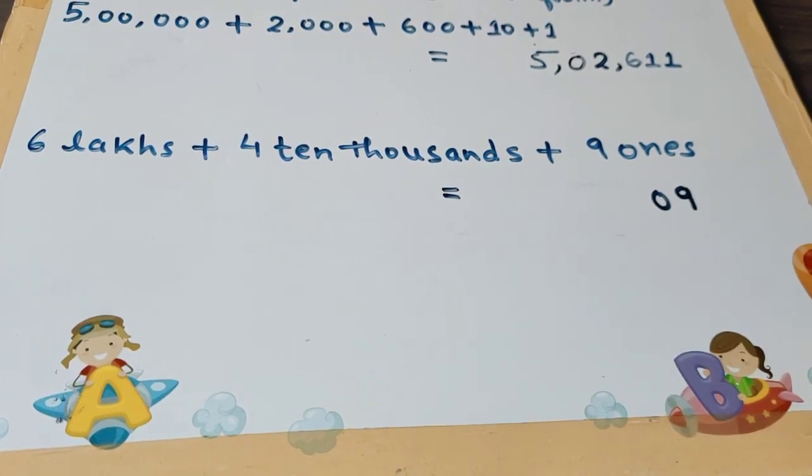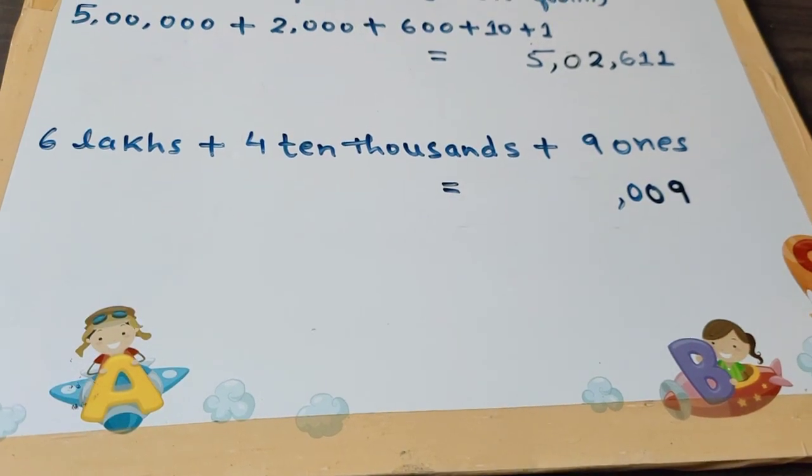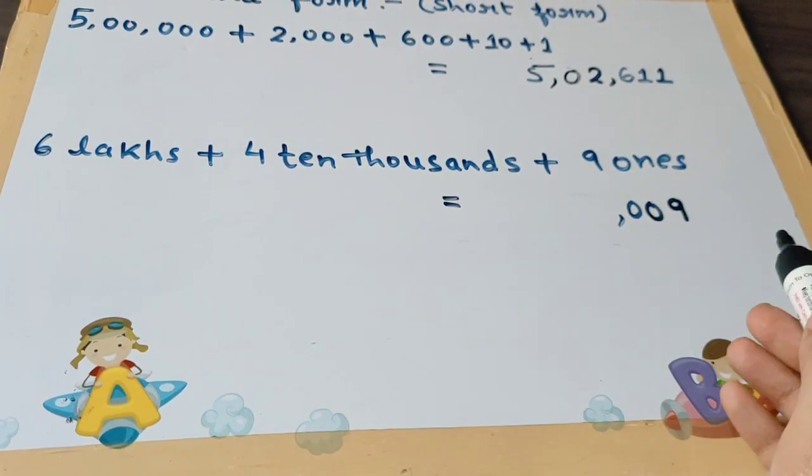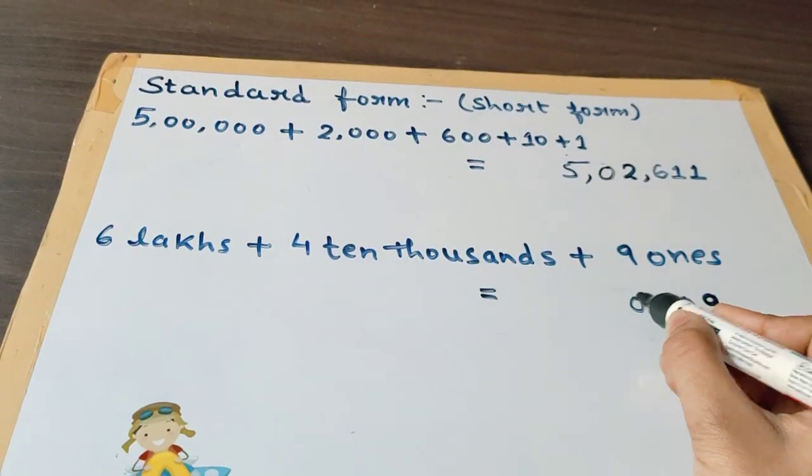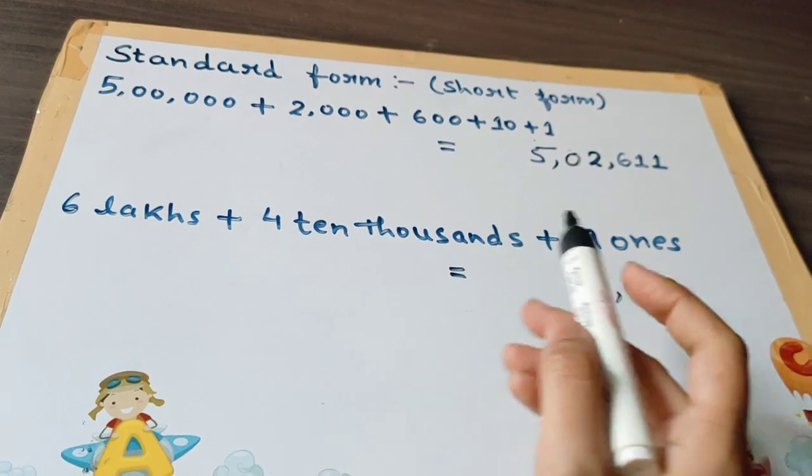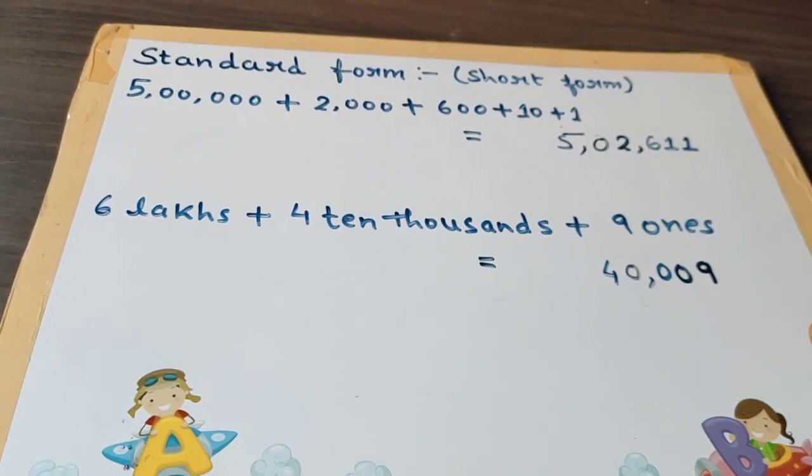At the hundreds place there is no number, so we will put 0 and a comma. At the thousands place there is no number, so we will put a 0. The 4 is at the ten thousands place, so we will write 4.